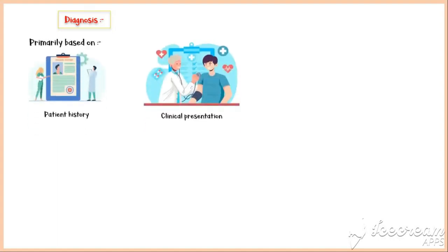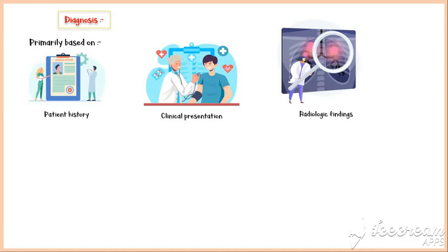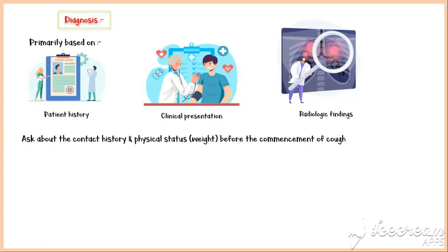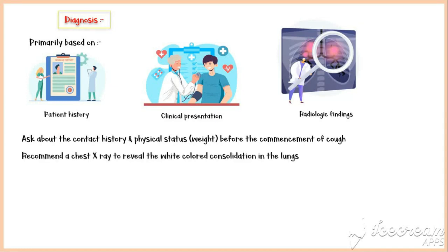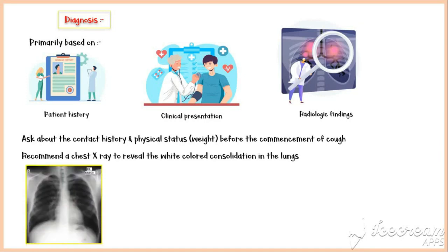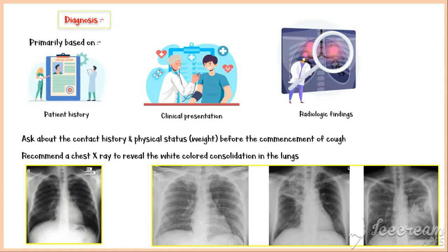Diagnosis of tuberculosis is primarily based on the patient's history, clinical presentation, and initial radiographic findings. Ask about the contact history and physical status, such as weight, before the commencement of cough. If tuberculosis is suspected, recommend a chest X-ray to reveal white-colored consolidation in the lungs. This is a chest X-ray of a healthy lung. These three X-ray images are of three tuberculosis patients — appreciate the white-colored consolidation in the lungs.